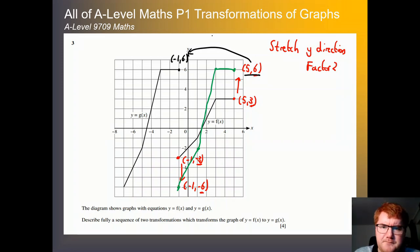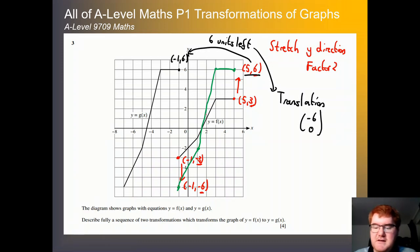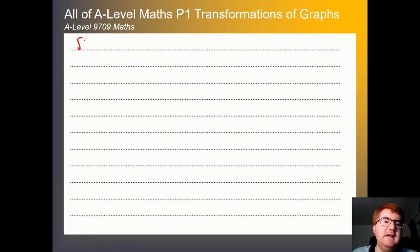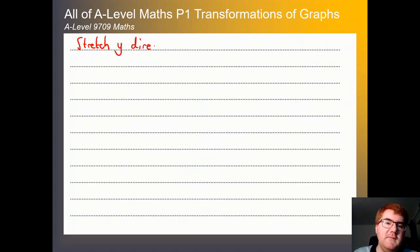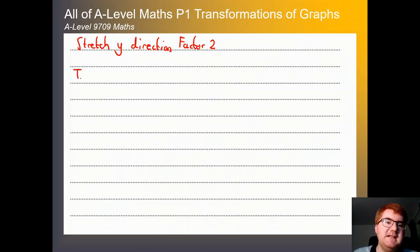How do we write that in the right notation? We call that a translation. We want 6 units left, so that's the vector (−6, 0). So those are the two transformations. Writing clearly: a stretch in the y direction, factor 2 — make sure we put all the information in to get all the marks — and then a translation of vector (−6, 0). Generally they will expect you to write this in vector notation.